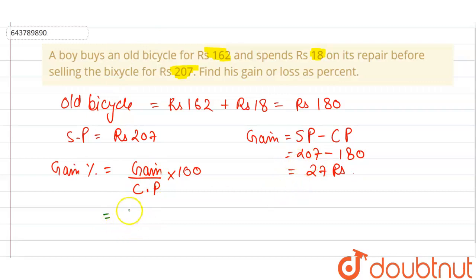Here is 27 rupees, so 27, and our CP which is 180, because 162 rupees was the old worth of the bicycle and the guy spent 18 more rupees to repair it, so it is 180 into 100. This gets cancelled. It is equal to 15 percentage. So there is a gain of 15 percent.